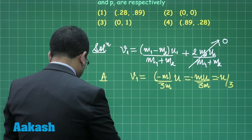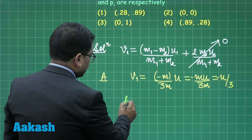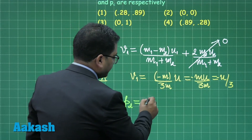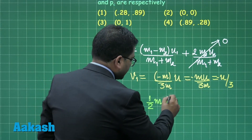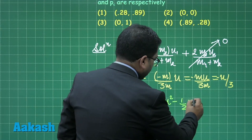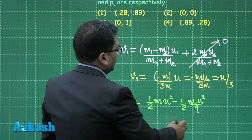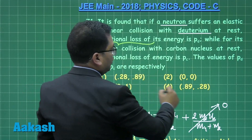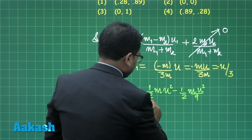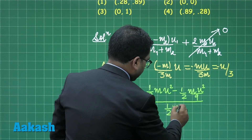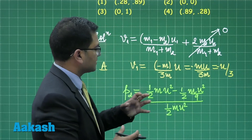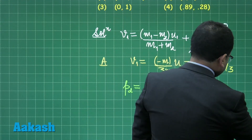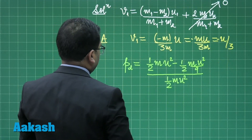The loss in kinetic energy for case A (magnitude) is: ½mu² - ½m(u/3)² = ½mu² - ½mu²/9. The fractional loss p_d is obtained by dividing this by the initial kinetic energy ½mu². Cancelling the common factors, p_d = 1 - 1/9 = 8/9. This is a straightforward arithmetic calculation.